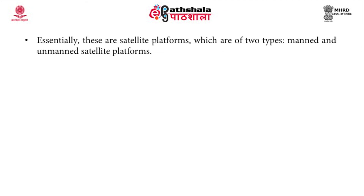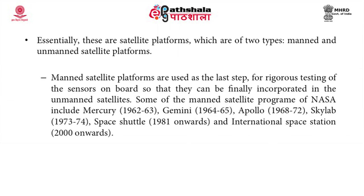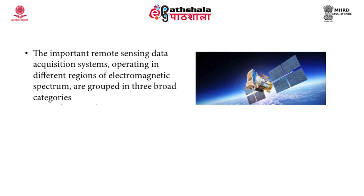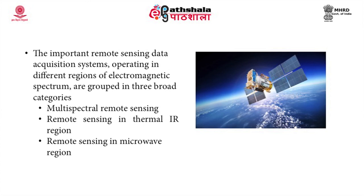Essentially, satellite platforms are of two types: manned and unmanned. Manned satellite platforms are used as the last step for rigorous testing of sensors so they can be incorporated in unmanned satellites. NASA's manned satellite programs include Mercury, Gemini, Apollo, Skylab, Space Shuttle, and the International Space Station. Unmanned remote sensing satellites include the Landsat series by NASA, the SPOT series by France, and the Indian Remote Sensing series by India. The important remote sensing data acquisition systems are grouped in three categories: multispectral remote sensing, remote sensing in the thermal infrared region, and remote sensing in the microwave region.